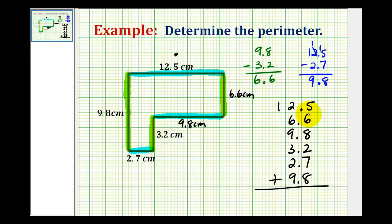So we have 5 plus 6 is 11, plus 8 is 19, plus 2 is 21, plus 7 is 28, plus 8 would be 36, carry the 3. 3 plus 2 is 5, plus 6 is 11, 11 plus 9 is 20, plus 3 is 23, plus 2 is 25.